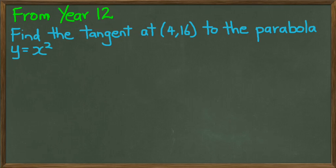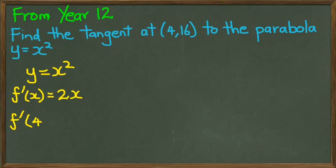So in year 12 you would have been used to finding the tangent at (4,16) to the parabola y equals x squared. For y equals x squared, the first thing you would do is find the differentiated function, which is 2x, and try and figure out what the gradient is at 4. In this case, the gradient is going to be 8.